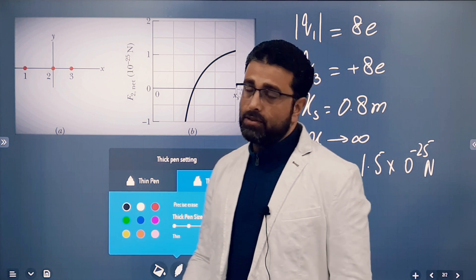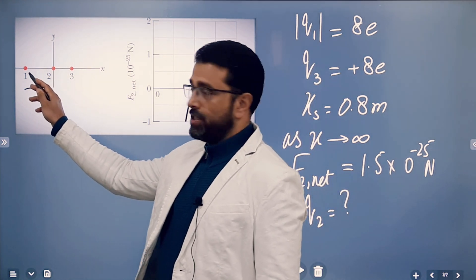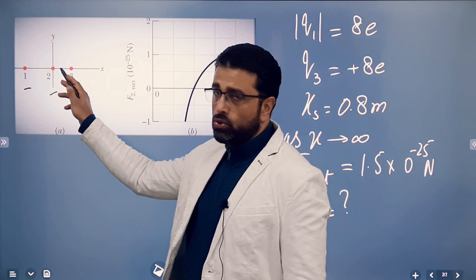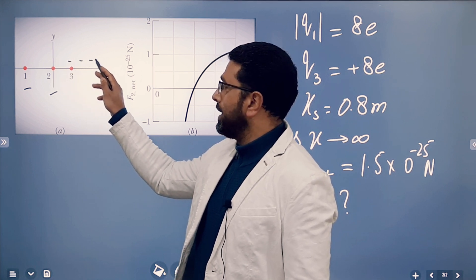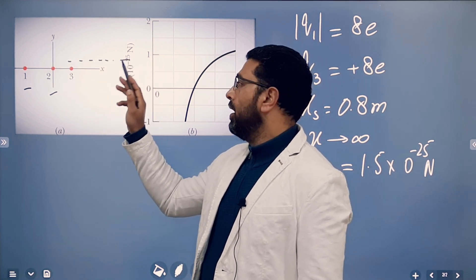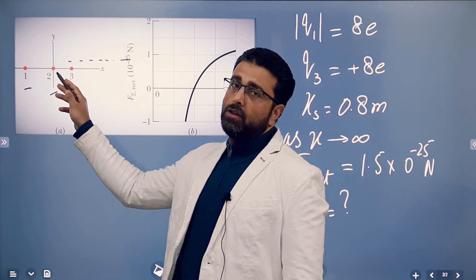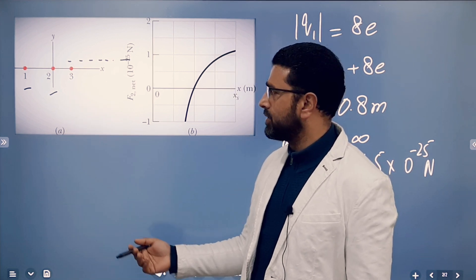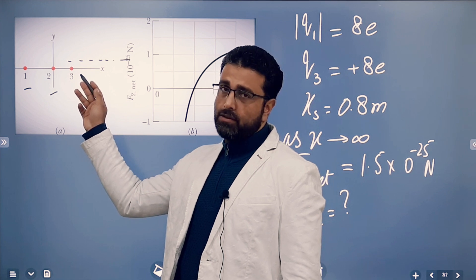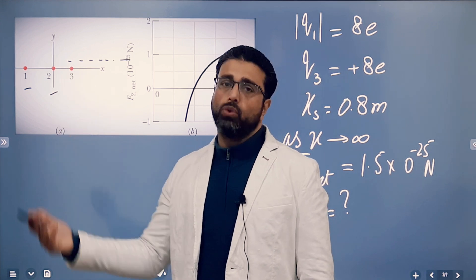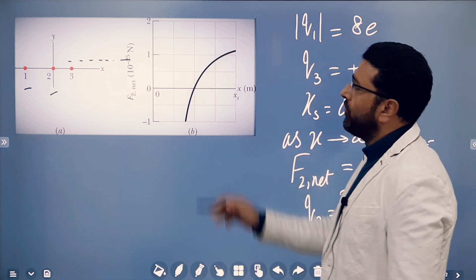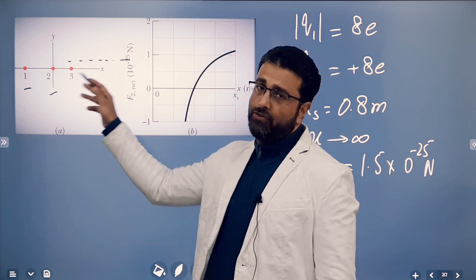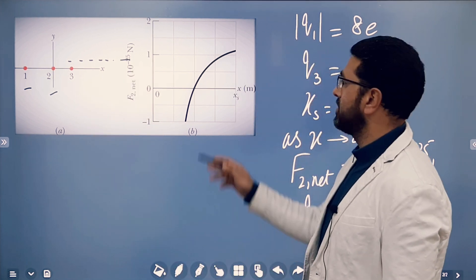We are given three particles. Particle 1 is fixed. Particle 2 is fixed. Particle 3 is initially very close to 2 and then moved along the x-axis away from particle 2. If particle 3 is moved away from particle 2, then the force on 2 from 3 will decrease. Then the net force on particle 2 will also change. How that net force varies with the changing position of particle 3, represented by x, is given by the graph.